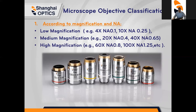For example, a low magnification and NA would be 4x NA 0.1 or 10x NA 0.25, compared to a high magnification and NA of 60x NA 0.8 or 100x NA 1.25.